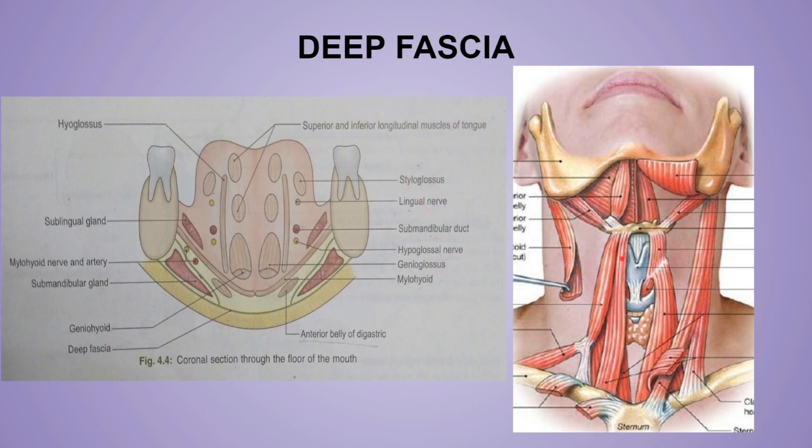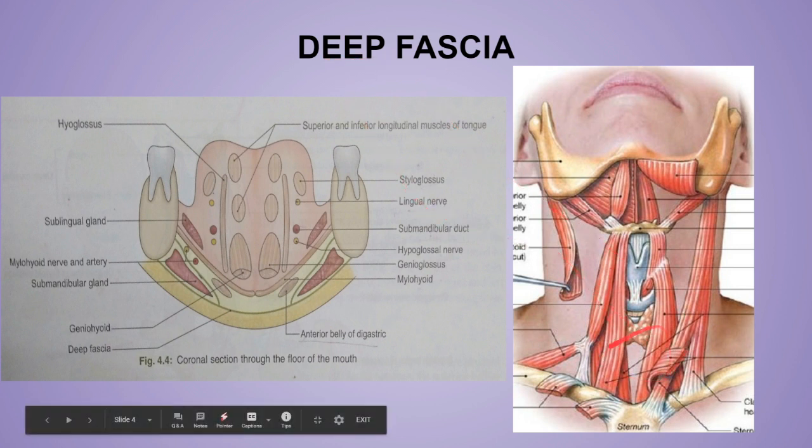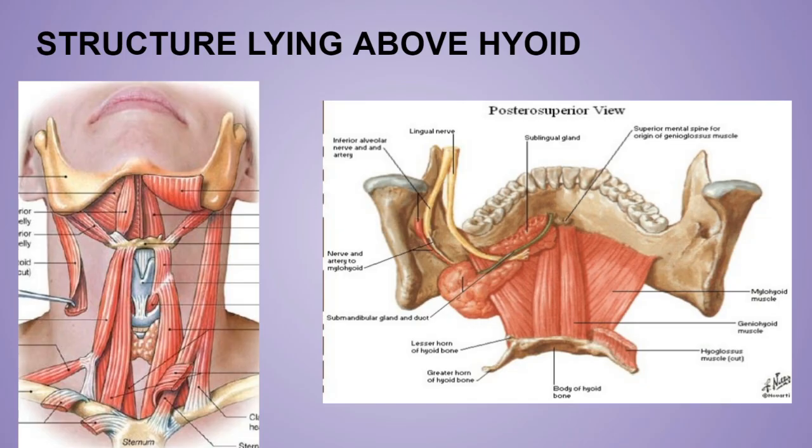Below the cricoid cartilage, the deep fascia splits to enclose the suprasternal space.